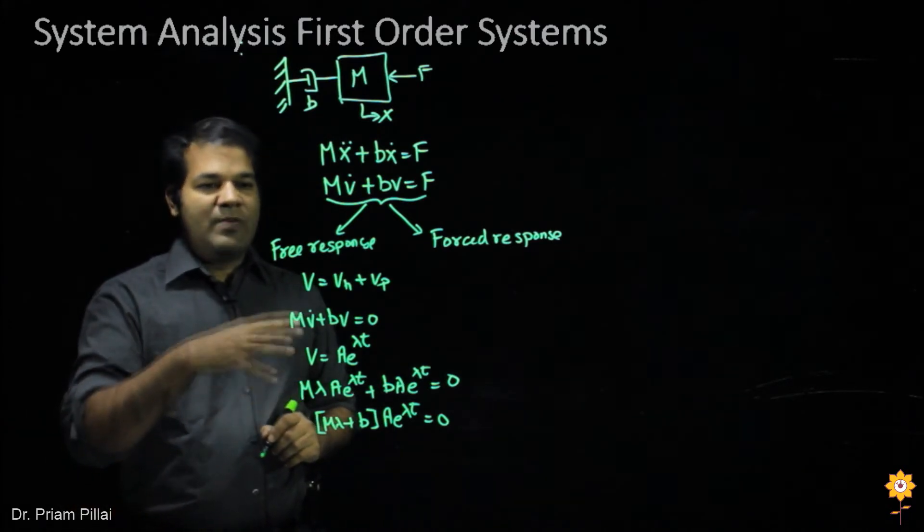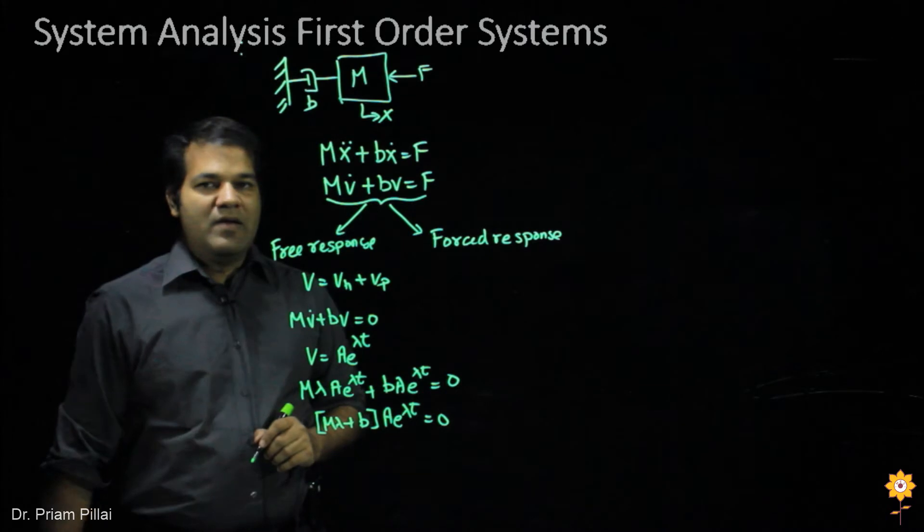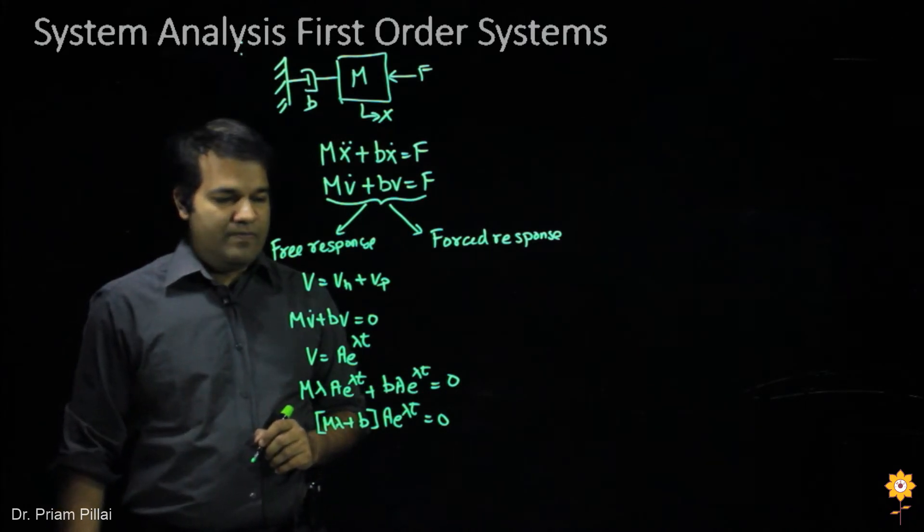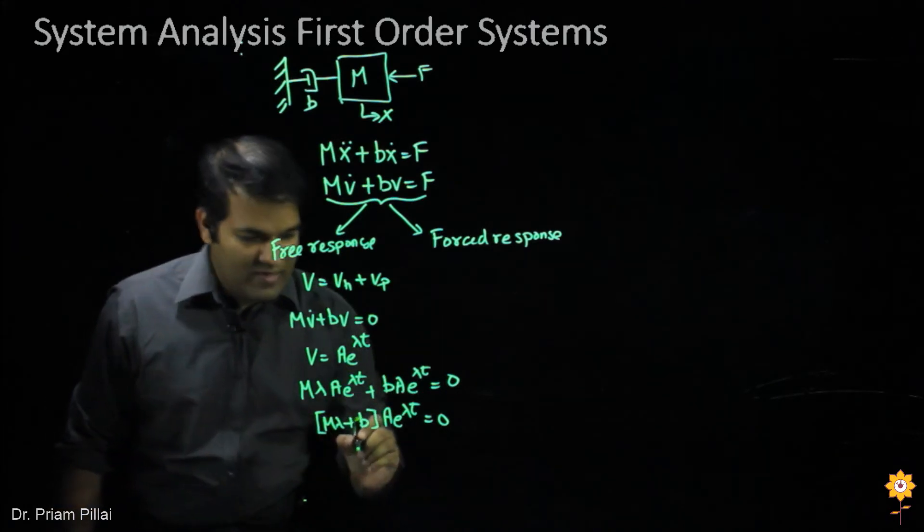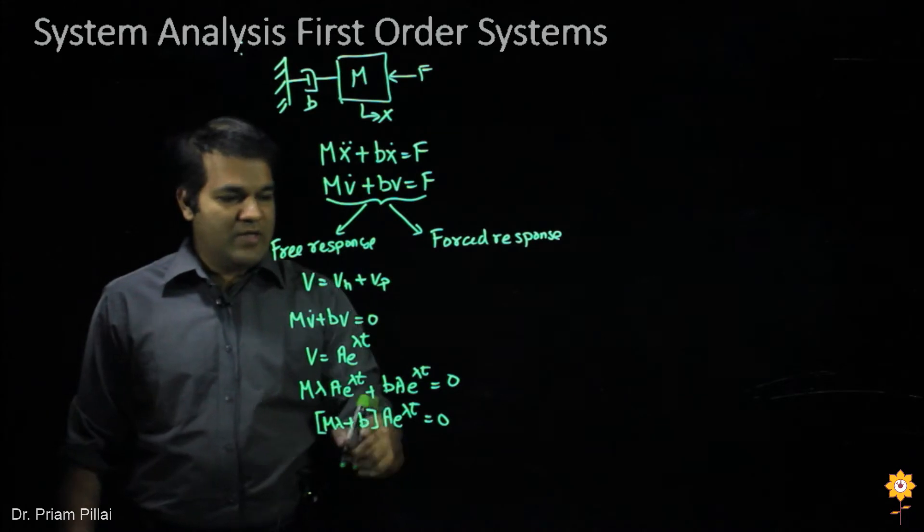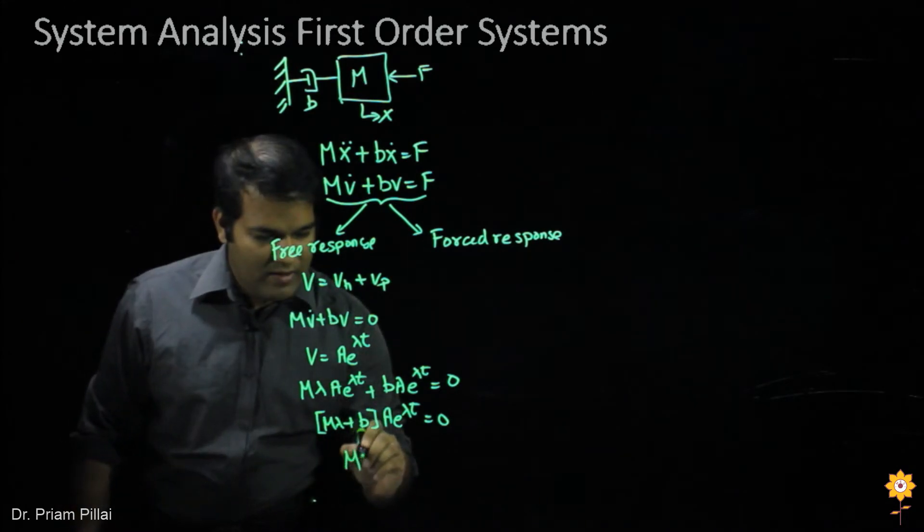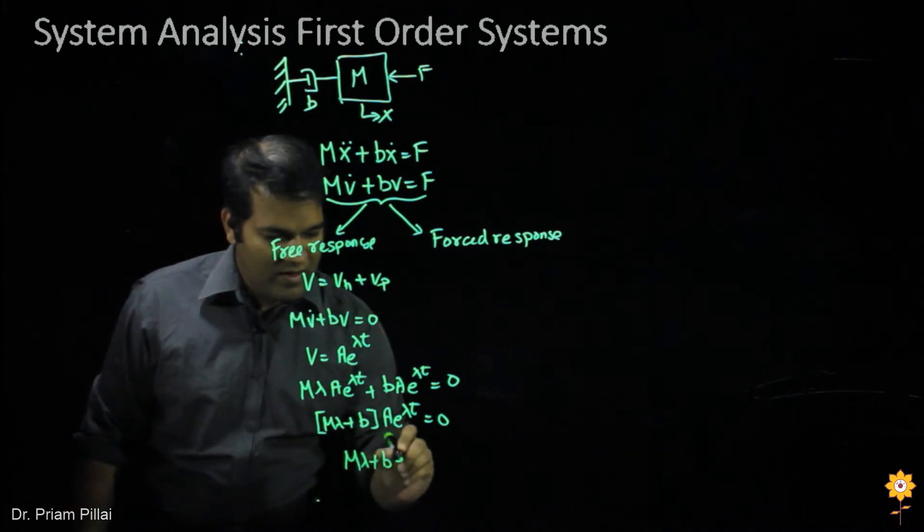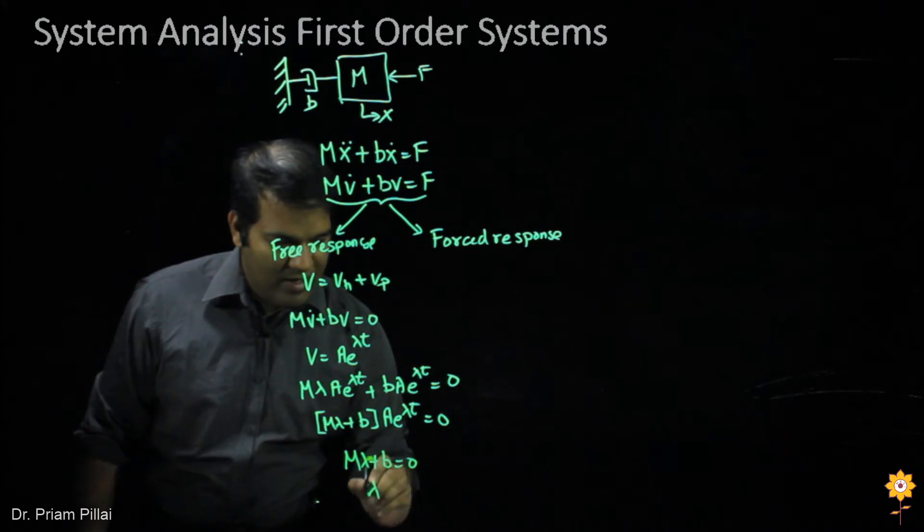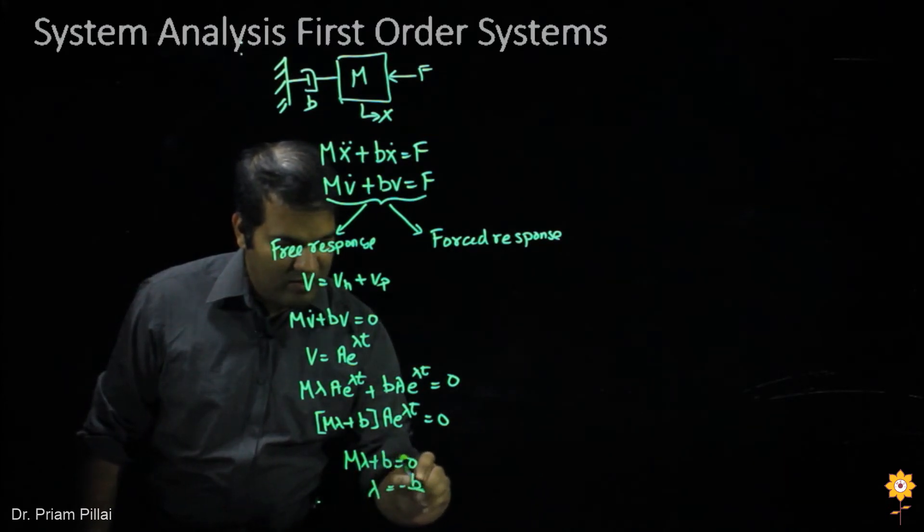And you can anticipate that this will show up again and again, even as we go to higher order systems. The solution of this is relatively simple. This piece cannot be 0, so m lambda plus b has to equal 0. So lambda would equal minus b by m.